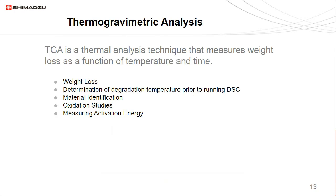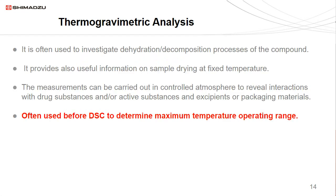Now we'll talk about thermogravimetric analysis, or TGA. TGA is a thermal analysis technique that measures weight loss as a function of temperature and time. Some examples of what TGA measures include weight loss, determination of degradation temperature prior to running a DSC, material identification, oxidation studies, and measuring activation energy. TGA is often used to investigate dehydration or decomposition processes of the compound, and provides useful information on sample drying at fixed temperature. Measurements can be carried out in a controlled atmosphere to reveal interactions with drug substances or active substances and excipients or packaging materials.